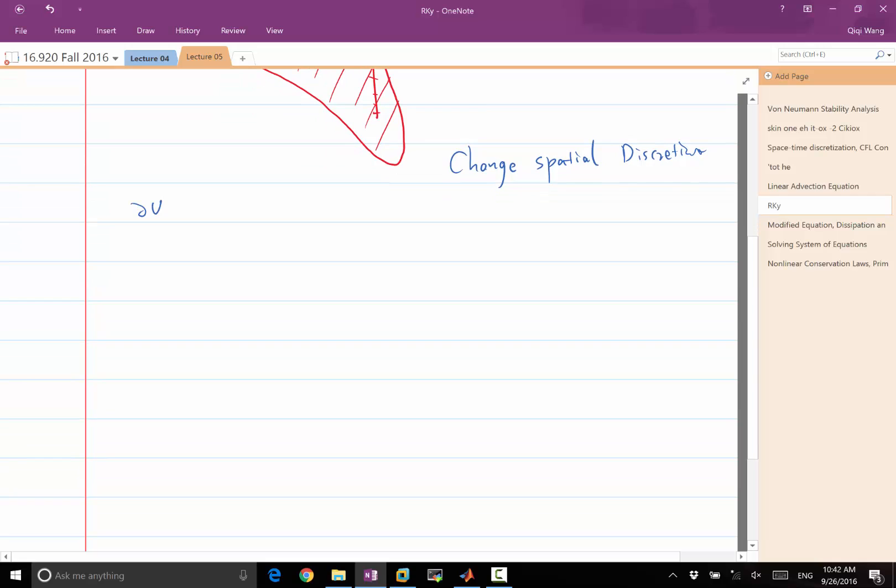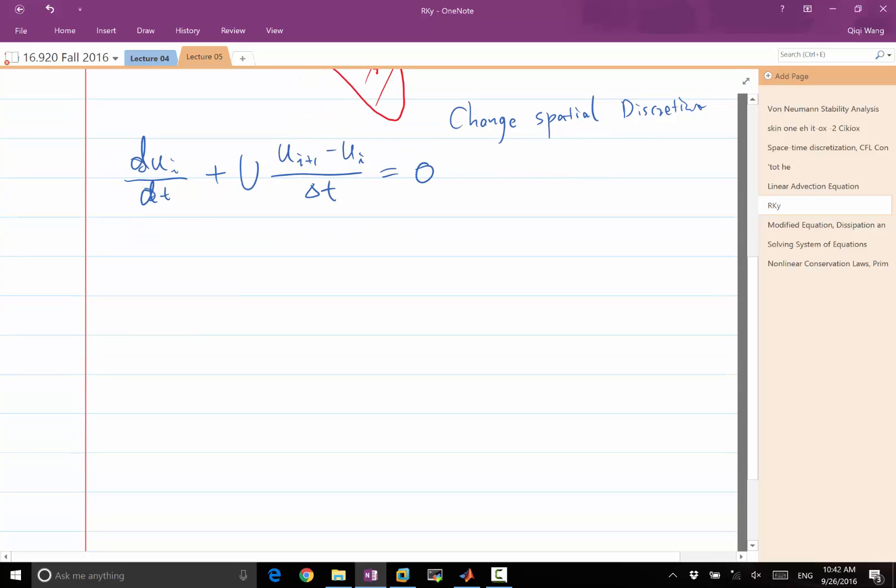So for example, let's do a trade-off. Instead of using the more accurate central difference scheme, let's use ui plus 1 minus ui over delta x. Let's bias towards one side to see what it does to change stability. We know it makes the accuracy worse, but can it make stability better? Sometimes we have to do a trade-off between stability and accuracy. So in this case, we plug in the same Fourier expansion here.